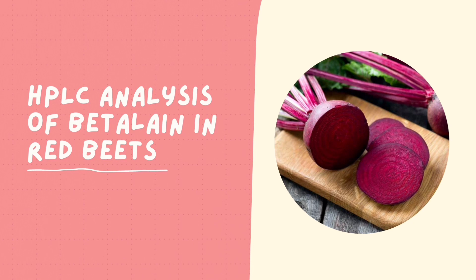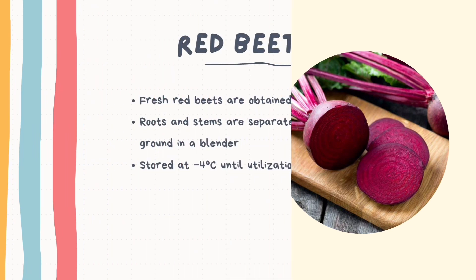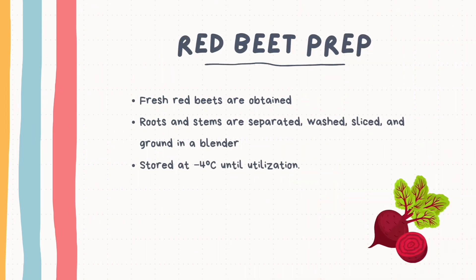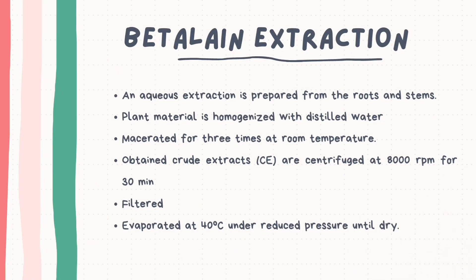Finally, we come to the methodology of the HPLC analysis of beta-lain in red beets. First, we prepare the red beets — fresh beets are obtained, roots and stems are separated, washed, sliced, and ground in a blender, then stored at negative 4 degrees Celsius until used. Second, we perform beta-lain extraction — the plant material is homogenised with distilled water and macerated three times at room temperature. The crude extracts are then centrifuged at 8,000 rpm for 30 minutes, filtered, and evaporated at 40 degrees Celsius under reduced pressure until dry.